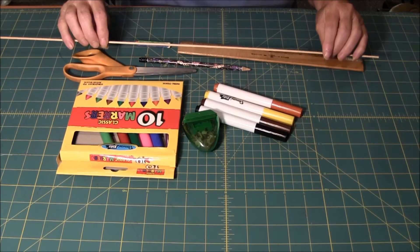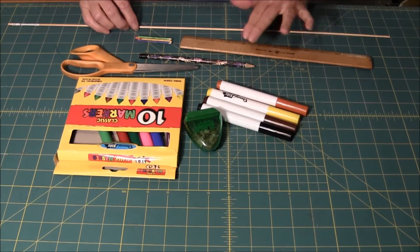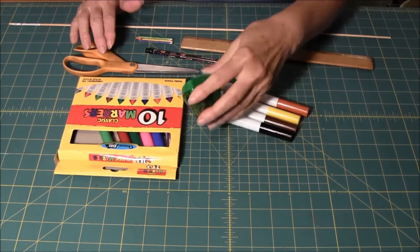What you're going to need is a 1 1⁄8 inch dowel, a ruler, pencil, scissors, markers, and a pencil sharpener.